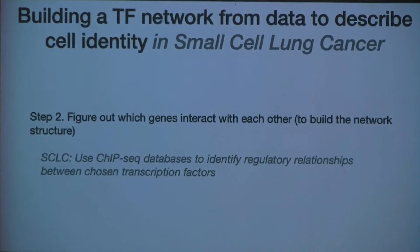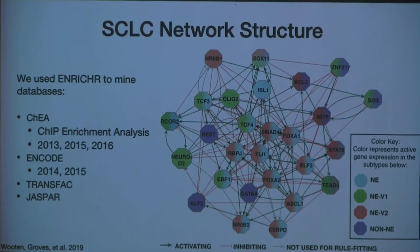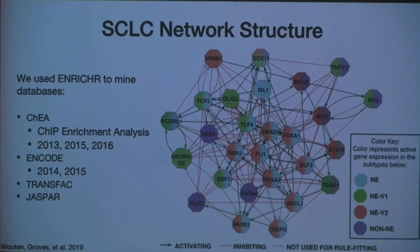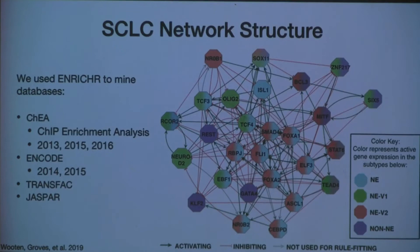The next step was to figure out which genes interact with each other — building the network structure. We used ChIP-seq databases via a tool called Enrichr, which mines multiple databases based on genes you provide. This tells us where different transcription factors can possibly bind and which other gene expressions they can change. We kept only connections found in at least three databases, using only direct connections.